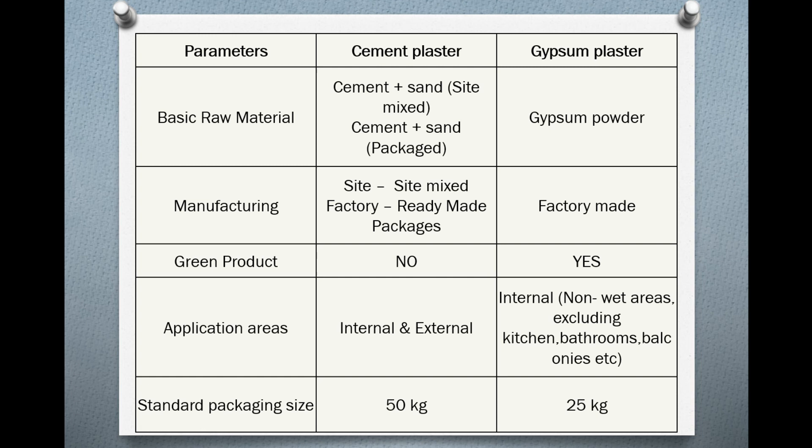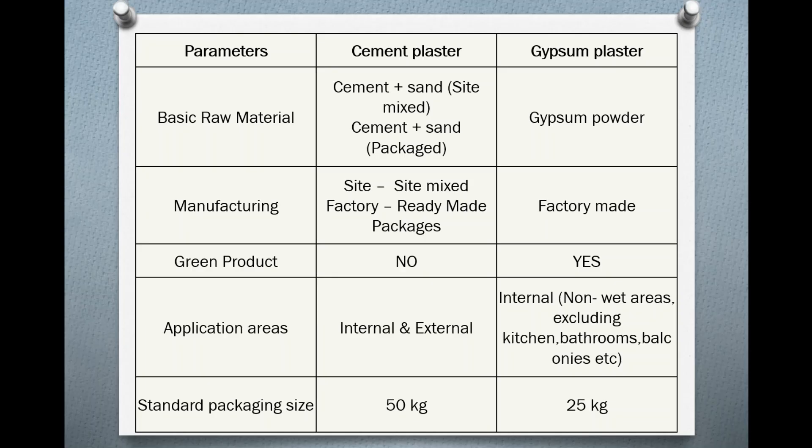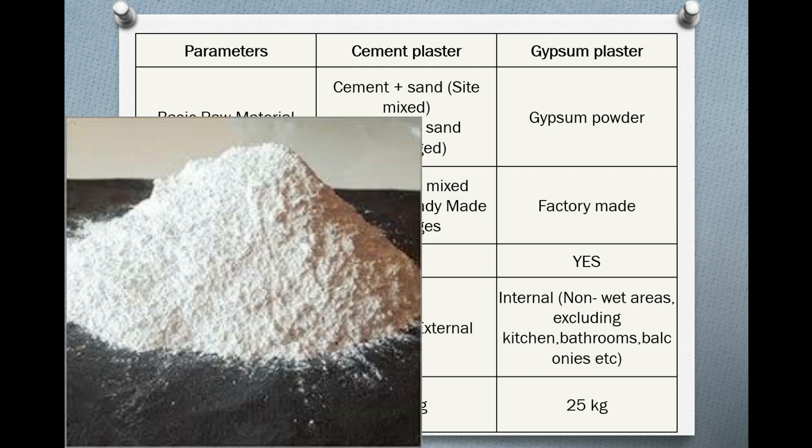First, the parameters. Let's talk about the basic raw material. For cement plaster, the basic raw material is cement to sand — we mix it on site or as ready mix. For gypsum plaster, we use gypsum powder.